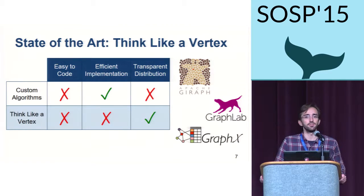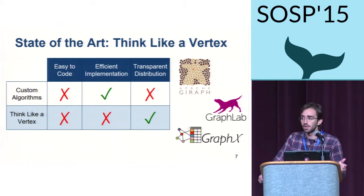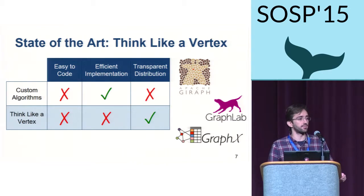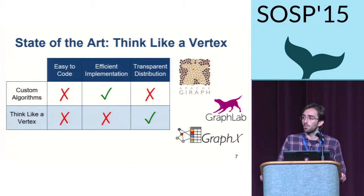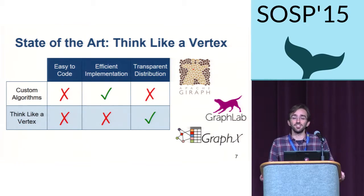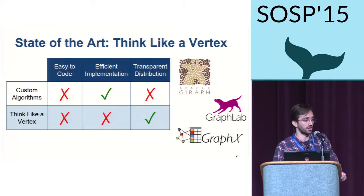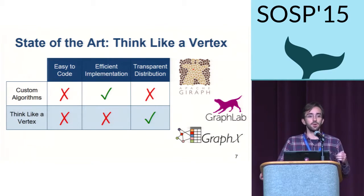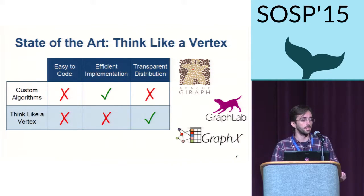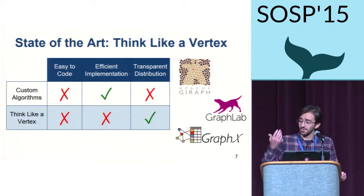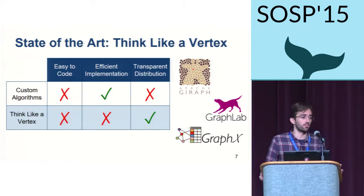You might think you can take advantage of current graph processing systems like Giraph, GraphLab, or GraphX. These systems transparently give you the distribution you are looking for, and they give you abstractions corresponding to the Think Like a Vertex model. While these abstractions are useful for implementing graph processing algorithms such as PageRank or label propagation, they are not suitable for graph mining algorithms. Having to deal with subgraphs at the granularity of vertices leads to data redundancy and computational overhead, and these abstractions fail to hide the complexities of exponential growth. Using these systems results in implementations that are poorly performant and poorly scalable.